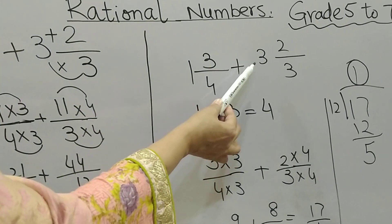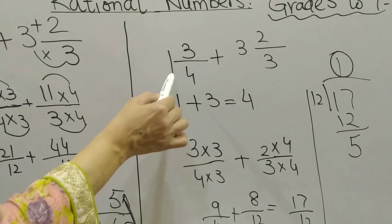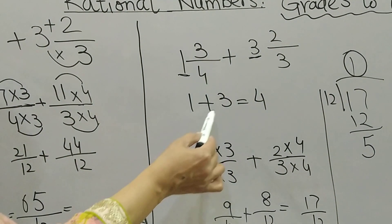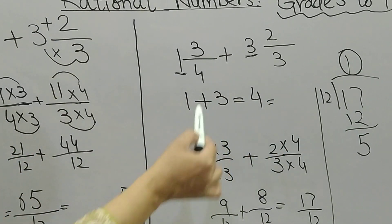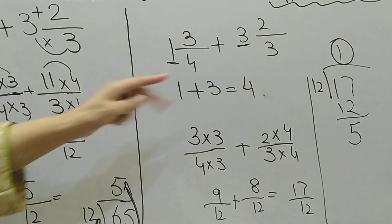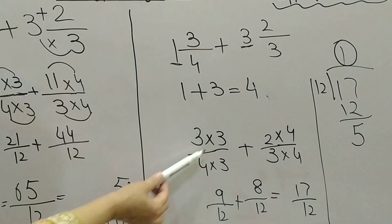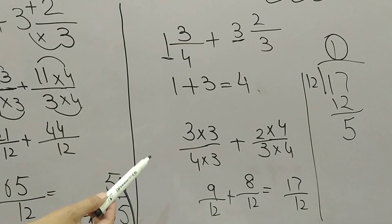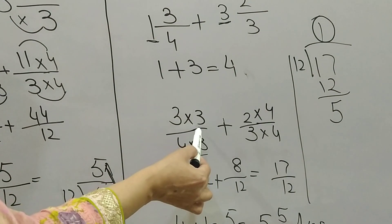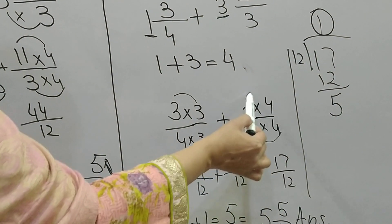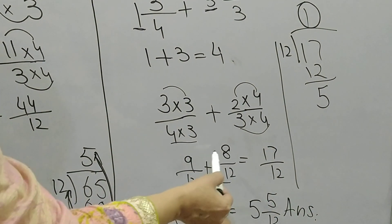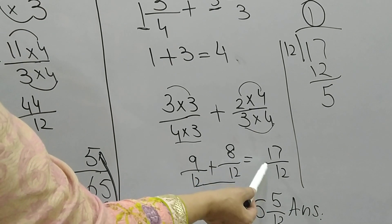There is another method for this same question: 1 whole 3 by 4 plus 3 whole 2 by 3. In this method I separate the whole numbers. Taking 1 and 3 together gives 4. Now I work with just the fractions: 3 by 4 and 2 by 3. To make their denominators the same: 4 threes are 12 and 3 threes are 9; 4 twos are 8. So 3 by 4 becomes 9 by 12 and 2 by 3 becomes 8 by 12.